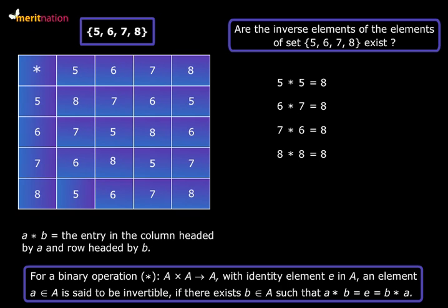So this implies that the inverses of all the elements of this set exist. And if you go back to the expressions again you will see that the elements 5 and 8, they are inverses of themselves. The element 6 that is the inverse of the element 7 and the element 7 that is the inverse of element 6.